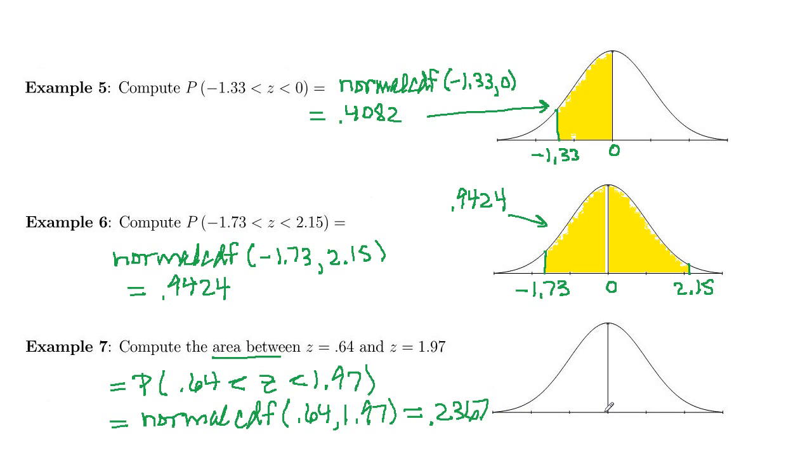Oh, we forgot to plot that. So 0.64, z equals 0 is here, 1 would be right here, 0.64 is about right here. And then 1.97, z equals 2 is right here, 1.97 approximately right there. So we are finding that area right there. And so the 0.2367, that's equal to the yellow area, and that's also the proportion of data that's between those two z-scores.